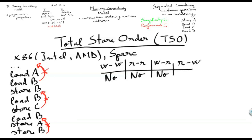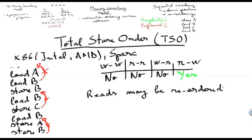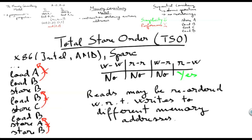Finally, the TSO Memory Model does allow reorderings between reads and writes. Reads may be reordered with respect to writes to different memory addresses. What this means is that if we have a store taking very long, a subsequent read can progress provided that it does not access the same memory address as the store. In our example, that means that the load of B can be executed before the store to C finishes. Again, it is important to note that this only concerns instructions that deal with different memory addresses. This can allow for better performance, but it can cause issues when dealing with concurrency.